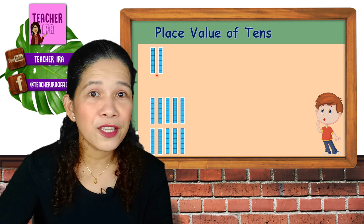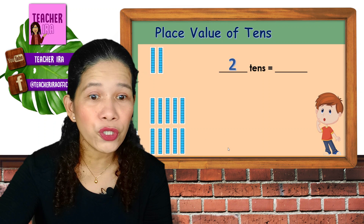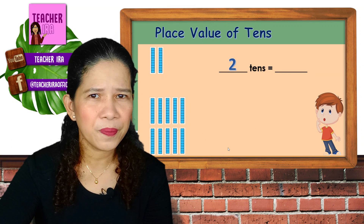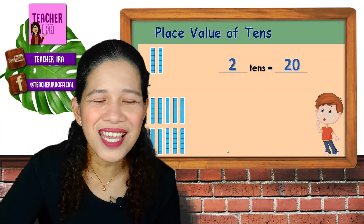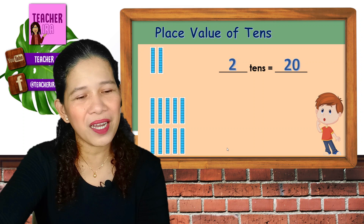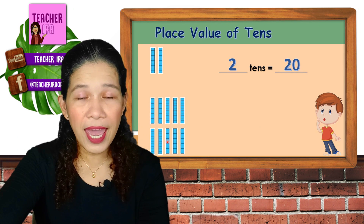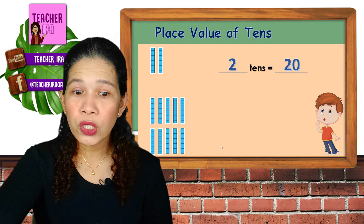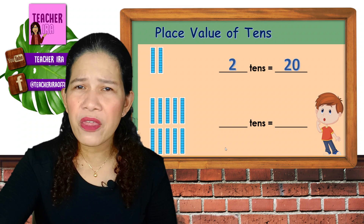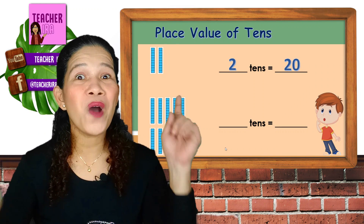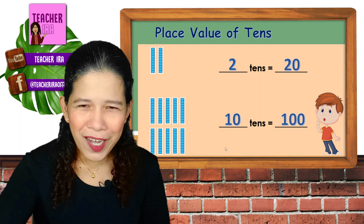Next, how many tens are there? Let's count — one, two. So you write two, and the number is 20. How about this one? Count: one, two, three, four, five, six, seven, eight, nine, ten — ten tens. How many tens? Yes, ten. And what could that number be? You are absolutely correct — ten tens equals 100!